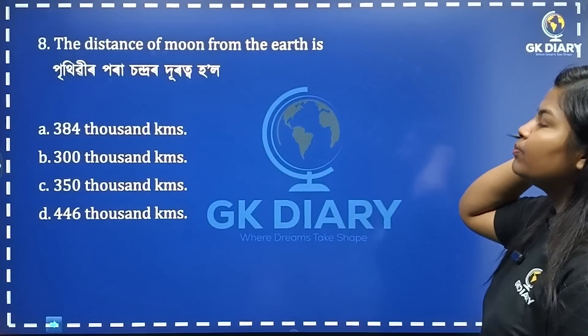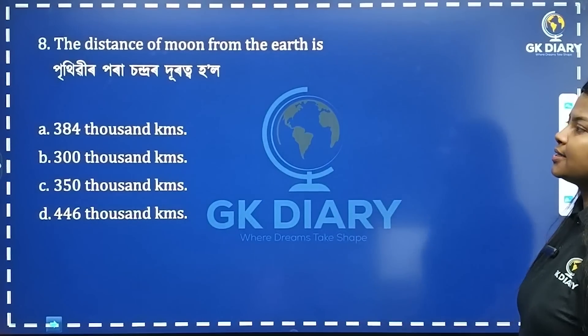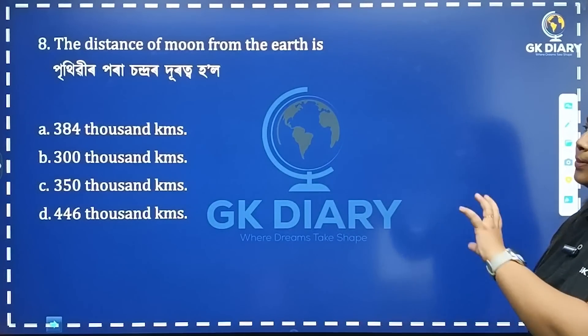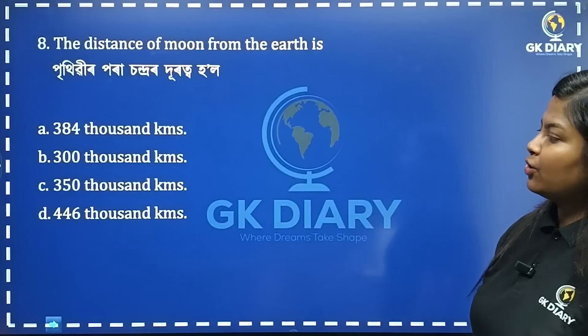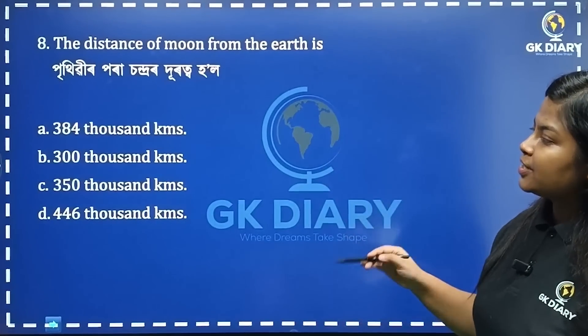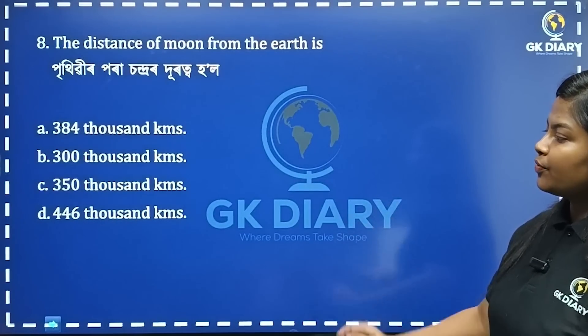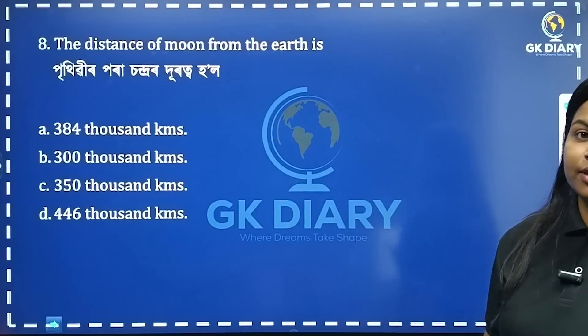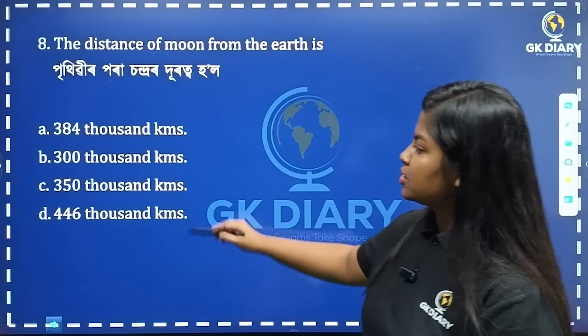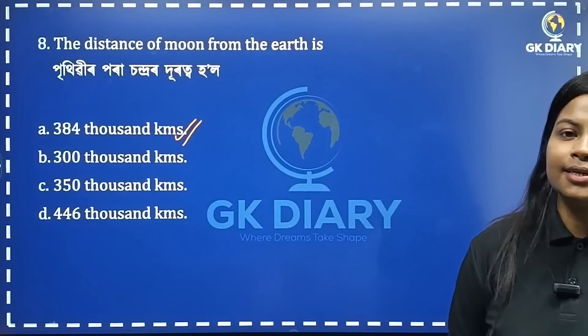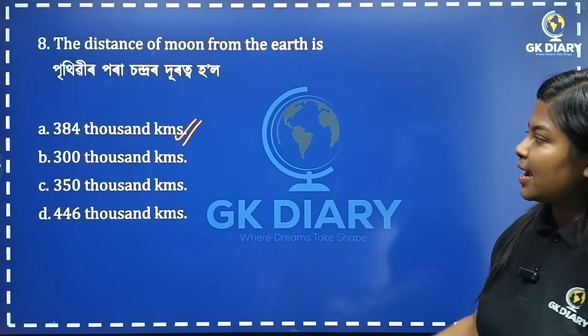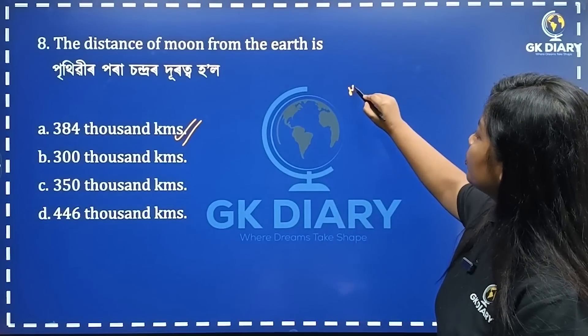The distance of the Moon from the Earth is — 384,000 km. 384 is the correct answer.